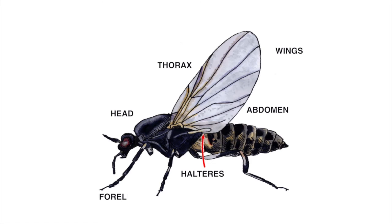They have a set of forelegs, middle legs, and hind legs, which are all broken up into the coxa, trochanter, femur, tibia, and tarsus.